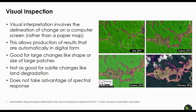Visual interpretation involves the delineation of change on a computer screen, producing results that are automatically in digital form. This method works best when image analysis tools and experience are limited, but it doesn't take full advantage of spectral responses and is not good for subtle changes like land degradation. The images on the right show how deforestation in Peru between July 2013 and February 2015 was delineated — we call this heads-up digitizing, where you digitize a polygon around the areas of change using GIS or image processing software.